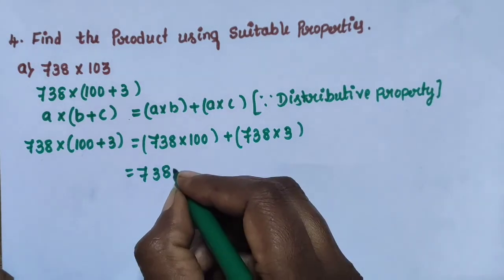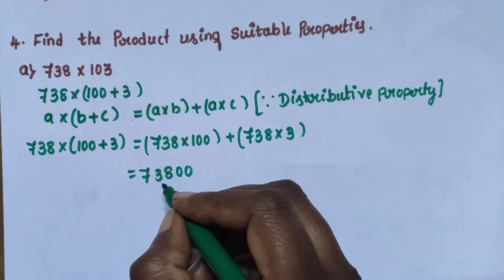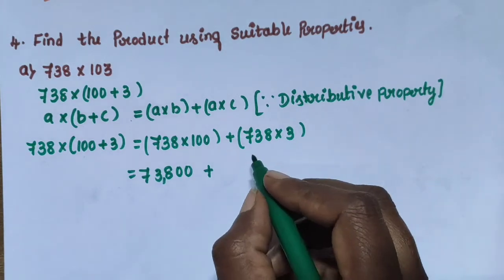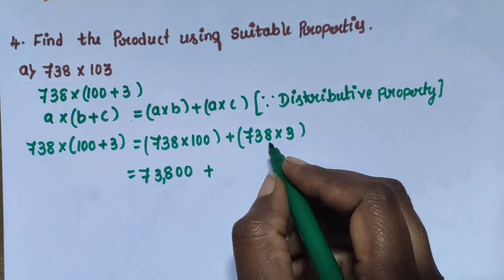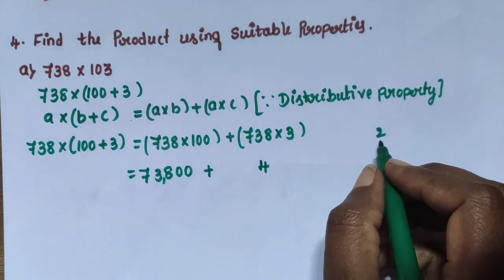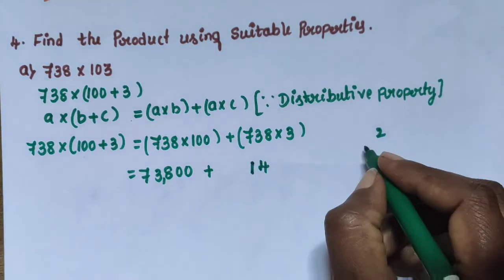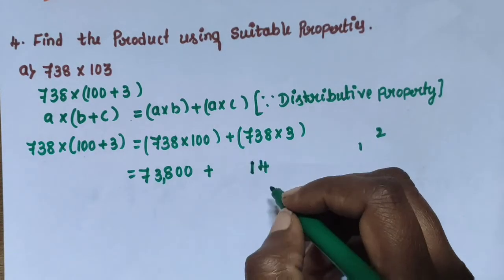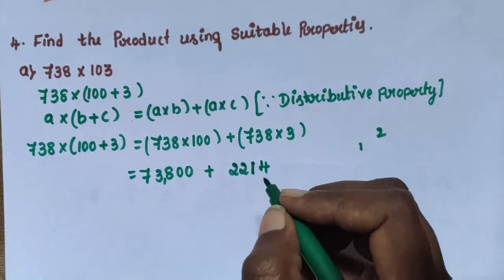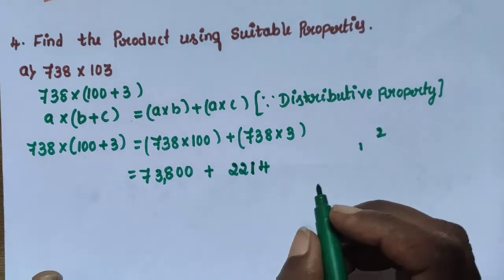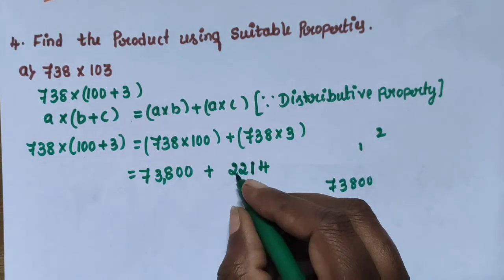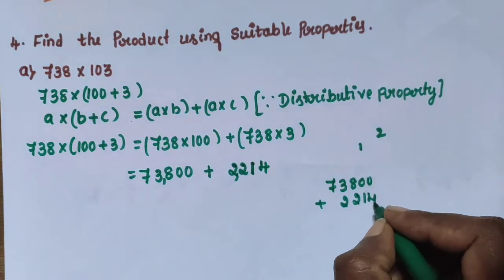738 into 100 gives 73,800 (join 2 zeros). Plus, multiply 738 into 3: 3 eights are 24, write 4 carry 2; 3 threes are 9, plus 2 is 11, write 1 carry 1; 3 sevens are 21, plus 1 is 22. So 738 into 3 equals 2,214. Add these two numbers: 73,800 plus 2,214.